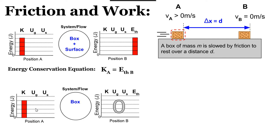So work was done — specifically negative work. What external force was doing negative work on the box? That force can be friction, because the surface is no longer inside the system. There was negative work done on the box by the force of friction. Why negative? Because the box is displaced to the right while the friction force acts in the exact opposite direction — to the left. Energy is transferred out and negative work is done.